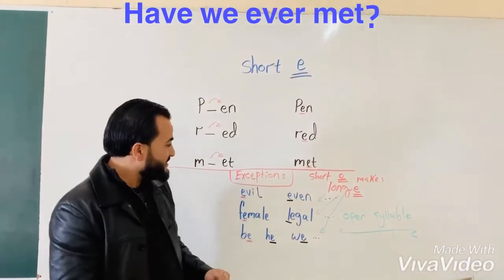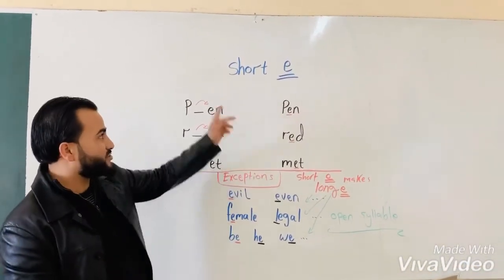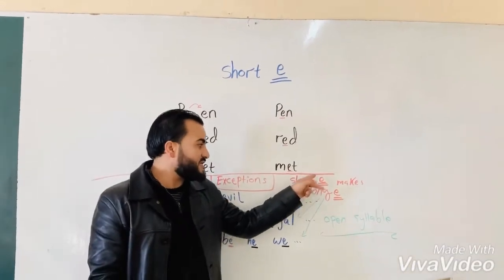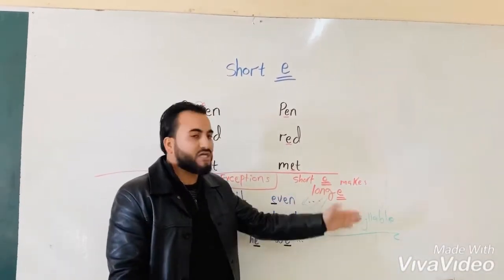Here, we have exceptions, of course, for the short e. The short e here makes long e. How?